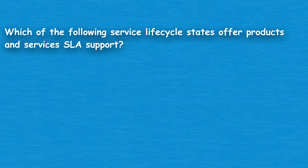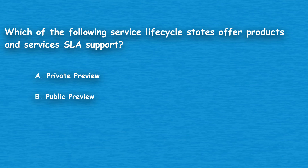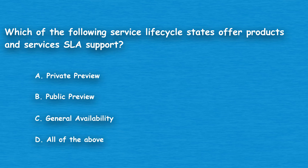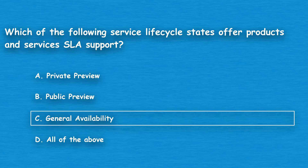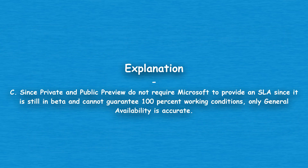The next question: which of the following service lifecycle states offer products and services SLA support? Option A: Private Preview. Option B: Public Preview. Option C: General Availability. Option D: All of the above. The correct answer is Option C, General Availability. Since private and public preview do not require Microsoft to provide an SLA — as they are still in beta and cannot guarantee 100% working conditions — only General Availability is accurate.